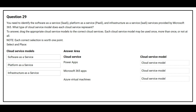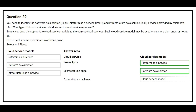Question number 29. You need to identify the Software as a Service, Platform as a Service, and Infrastructure as a Service provided by Microsoft 365. On the left side you have the cloud service modules, on the right side you have the cloud service, and you need to choose the correct cloud service module. The first cloud service is Power Apps — the correct module is Platform as a Service. The second is Microsoft 365 Apps — the correct module is Software as a Service. The third is Azure Virtual Machines — the correct module is Infrastructure as a Service.